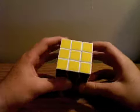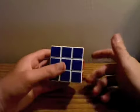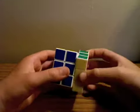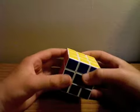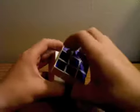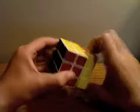If I were to say R prime, you would turn the right face counterclockwise as though you were facing it. This would be R prime. This would be L prime. This would be U prime. This would be D prime. This would be F prime. And this would be B prime.